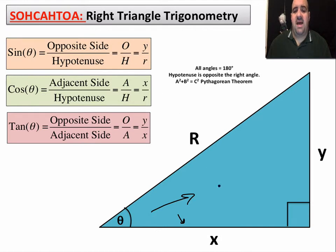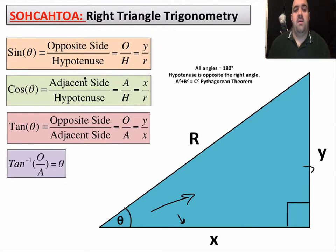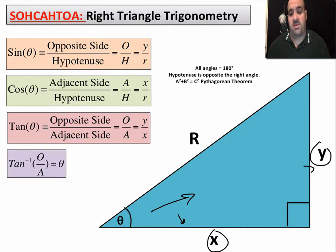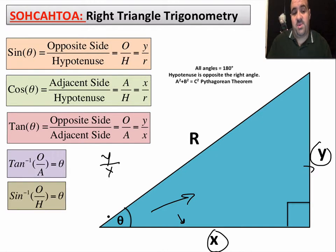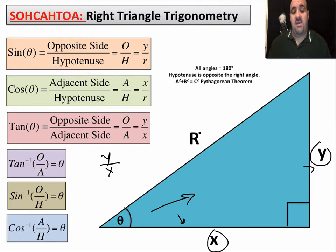You can figure out angles based on knowing the lengths of the sides of a triangle. There are inverses of these functions. For example, if you took the inverse tangent — tan⁻¹ — of y divided by x, that would tell you the angle theta, as long as your calculator is in degree mode. You've got to be very careful that your calculators are in degree mode and not radian mode. The inverse of sine and cosine work the same way.